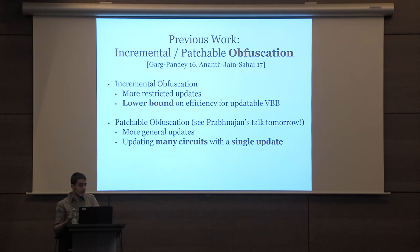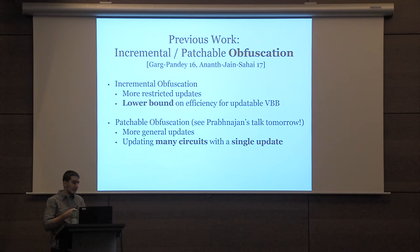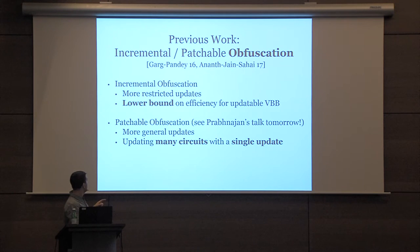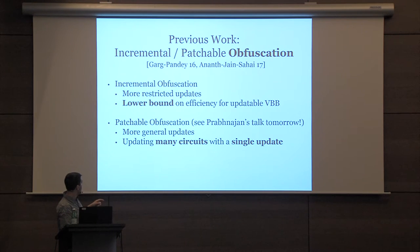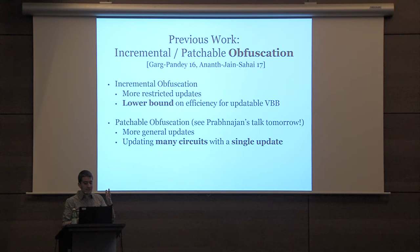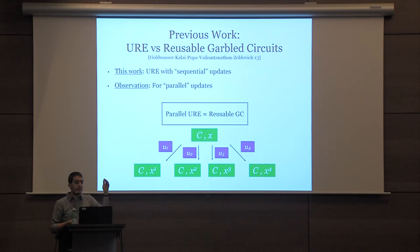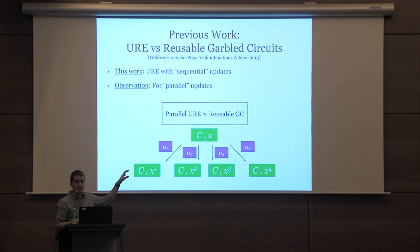On to the obfuscation work: there are these two works on incremental and patchable obfuscation. Both model things slightly differently in terms of update types and constructions. I recommend them — in particular, the first work by Garg and Pandey has a cool lower bound on how efficient you can make these things, and the patchable obfuscation work, which Prabanjan is going to talk about, allows one update to update many obfuscated circuits. Parallel updatable randomizing coding also closely corresponds to reusable garbled circuits, which have been considered before.